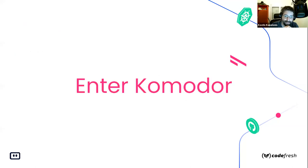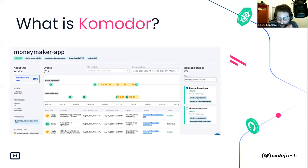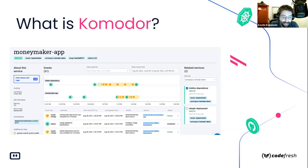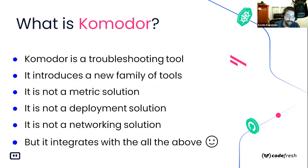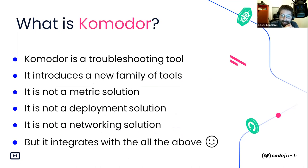Commodore solves these two problems: don't visit five different systems unless absolutely necessary — start from a single system, drill down to the problem, and find the information you need in a self-service manner without waking up people to ask where the logs are. Commodore is a dashboard designed exactly for solving problems with Kubernetes applications. You install a small agent on the cluster and there's a dashboard — a hybrid installation similar to how Codefresh also works.